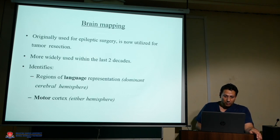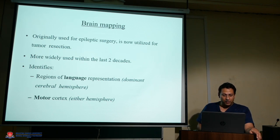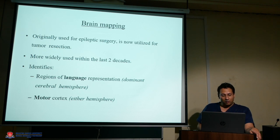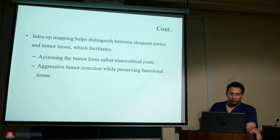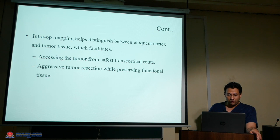Intraoperative monitoring, originally used for epilepsy surgery, is now used for tumor resection, most widely within the last two decades. It identifies the location of language representation in the dominant cerebral hemisphere and the motor cortex of either hemisphere. Intraoperative mapping helps distinguish between eloquent cortex and tumor tissue, facilitating access to the tumor from the safest transcortical route and enabling aggressive tumor resection while preserving functional tissue.